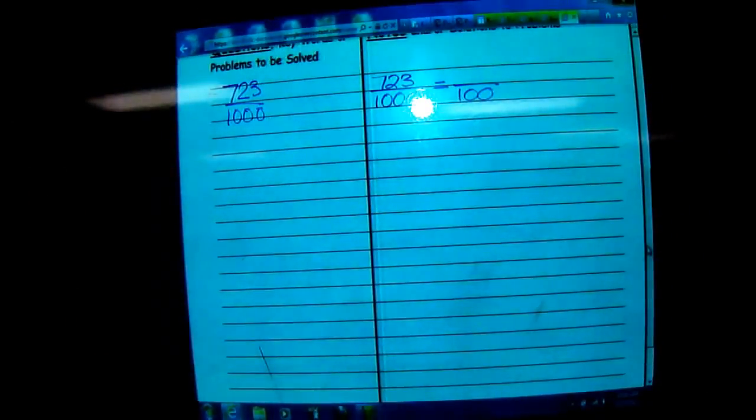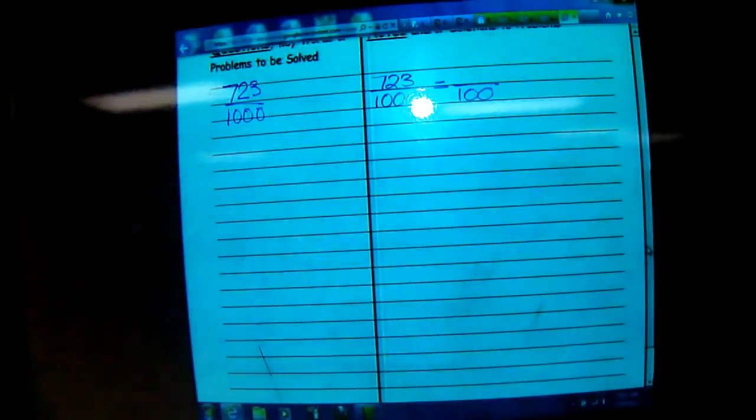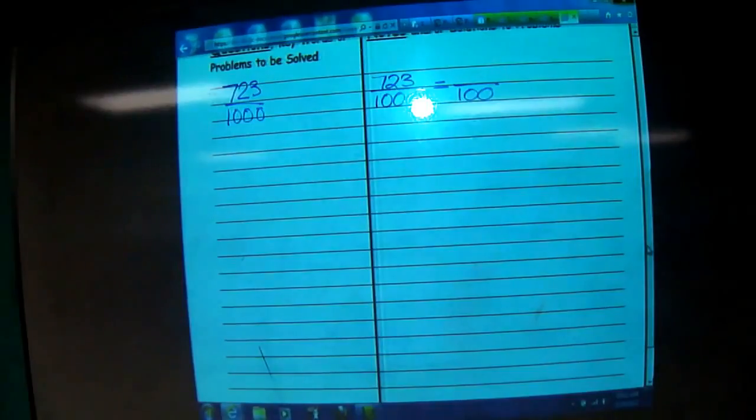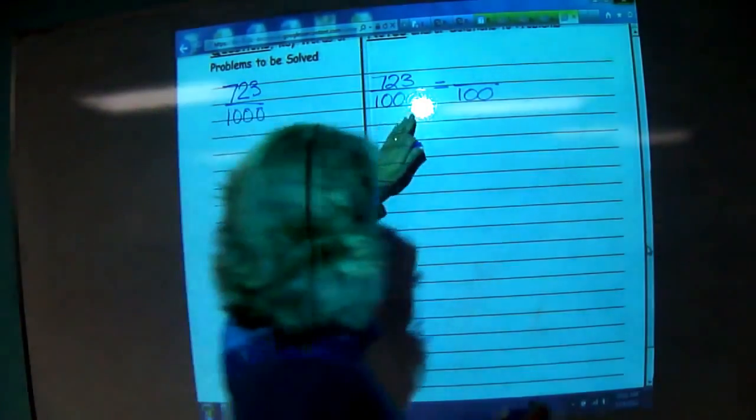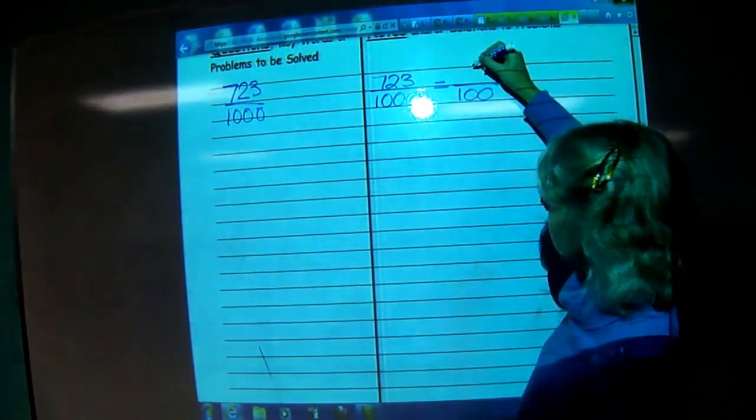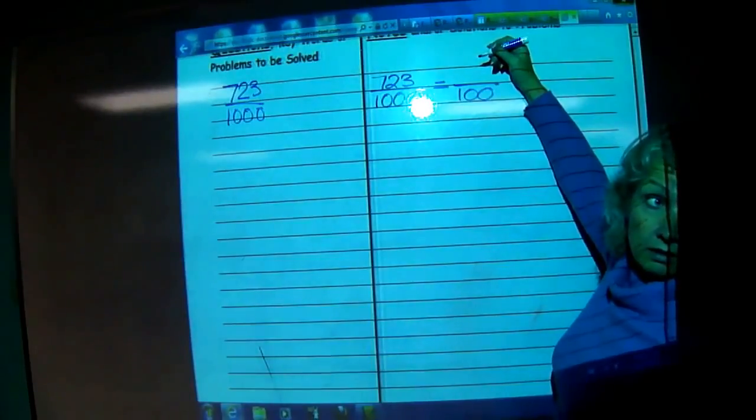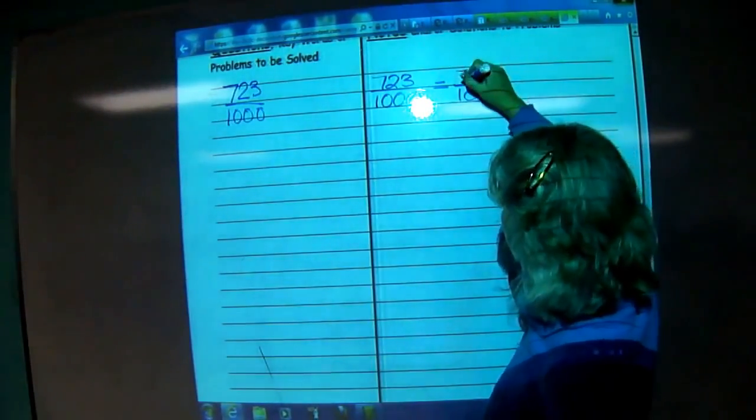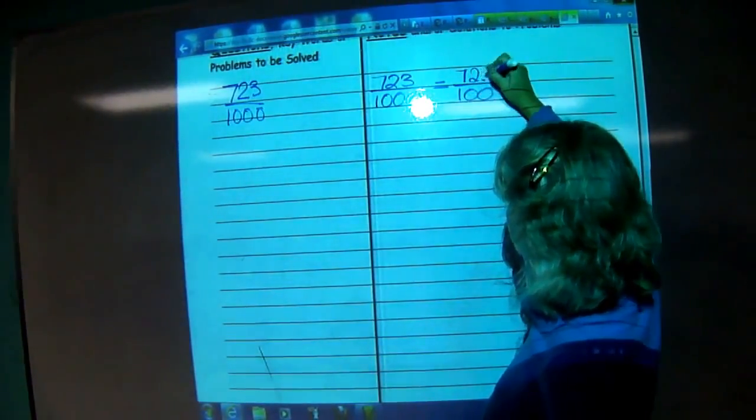To turn 1,000 into 100, we divide it by 10, because we removed a zero, right? So what's 723 divided by 10? 72.3, right?